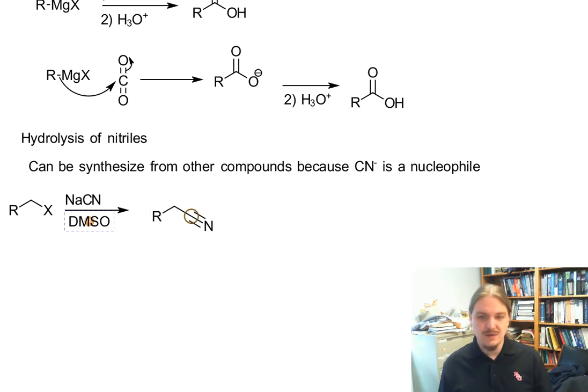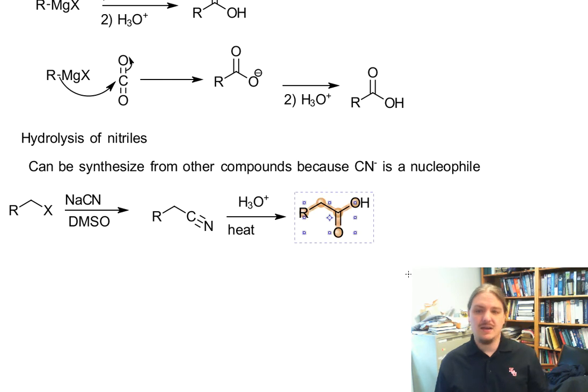I want to show the carbon label here. And the nitriles are generally hydrolyzed under aqueous acidic hydrolysis, and often this requires heat. So you need a molecule that can withstand those kinds of conditions, but you can generate the carboxylic acid from the nitrile when you started from a halide or some other leaving group.